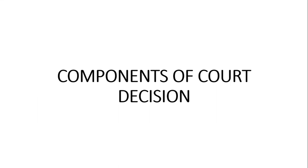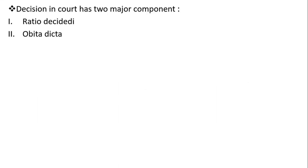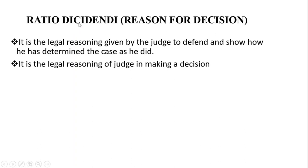A court decision is based on two major components. One of them is Ratio Decidendi and Obiter Dicta. Ratio Decidendi is also referred to as the reason for decision.